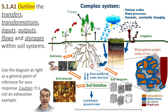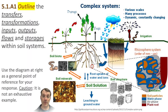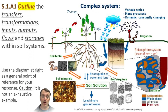Remember that the name of this topic is soil systems, and this is an Environmental Systems and Societies class. So you have to picture and treat soils as systems. On your exam, you may be asked to outline the transfers, transformations, inputs, outputs, flows, and storages within soil systems. Think about all the water entering from precipitation, percolating downwards due to gravity — that's a transfer. As that water moves, it carries nutrients with it, giving you downward leaching of nutrients — another transfer or flow.